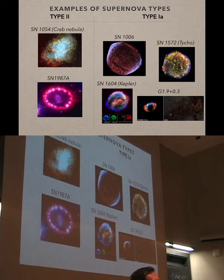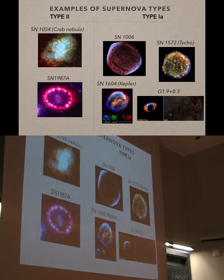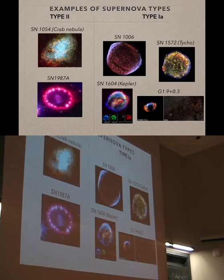A supernova can illuminate nearby material under certain conditions — that's actually the whole point of Type IIn interacting supernovae. Some really cool historical supernovae were first discovered by ancient civilizations and can even be seen with the naked eye. For example, SN 1006 was discovered by the Chinese; the Tycho Supernova of 1572 was discovered by Europeans; and Kepler's supernova of 1604 — Kepler was a student of Tycho. You can see different morphologies between the two types. Type Ia appear rounder and Type II more complex.